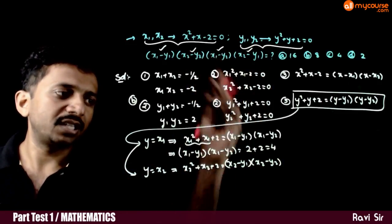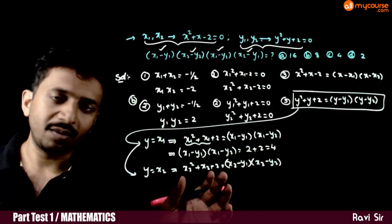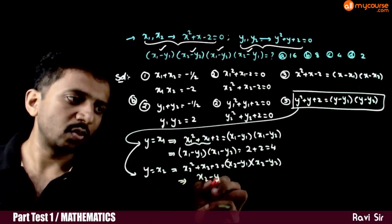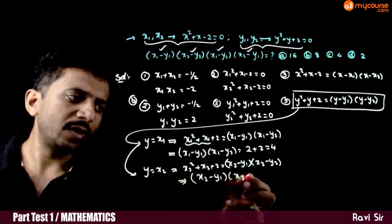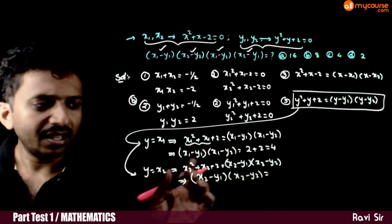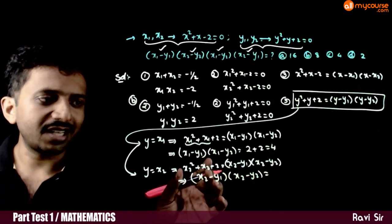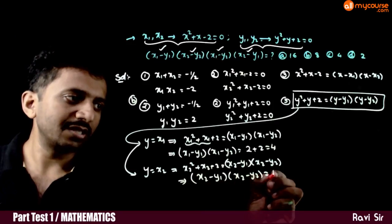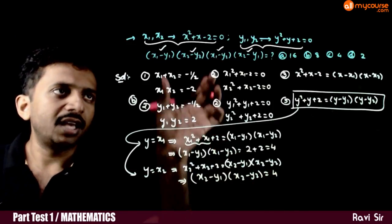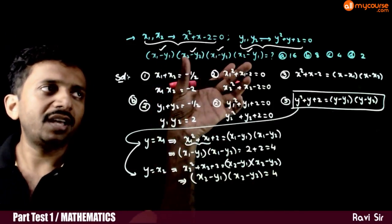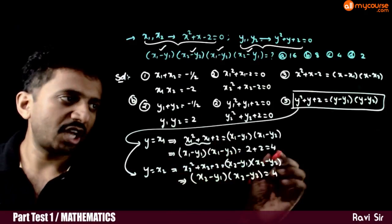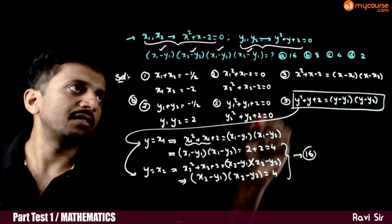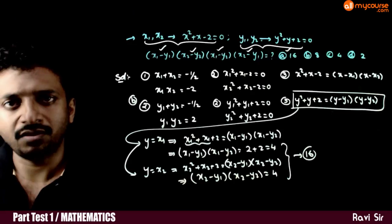Similarly, x2 minus y1 into x2 minus y2 equals x2 squared plus x2 plus 2. Since x2 is a root of the first equation, x2 squared plus x2 minus 2 equals 0, so x2 squared plus x2 equals 2, giving 2 plus 2 equals 4. Both pairs give a product of 4, so the product of all four factors is 4 times 4 equals 16. Therefore, option A is the correct answer.